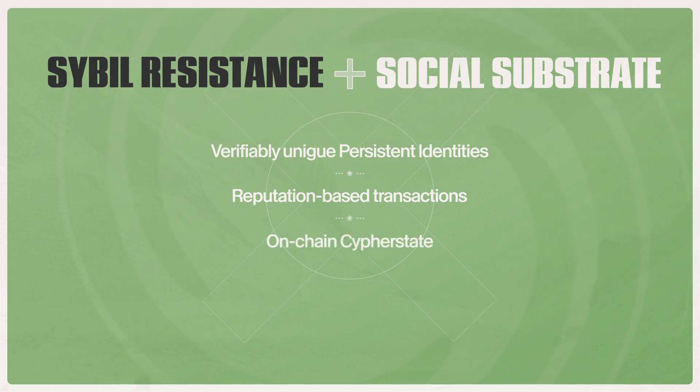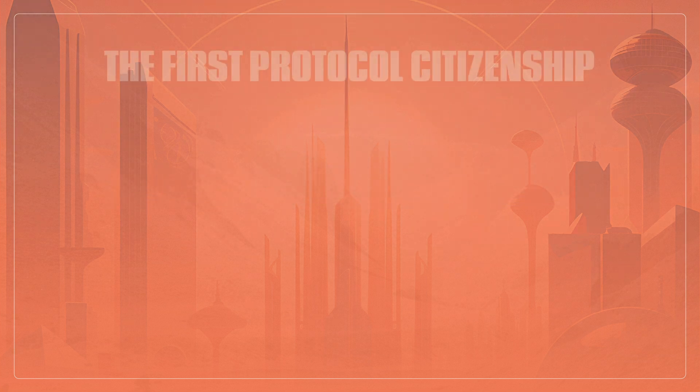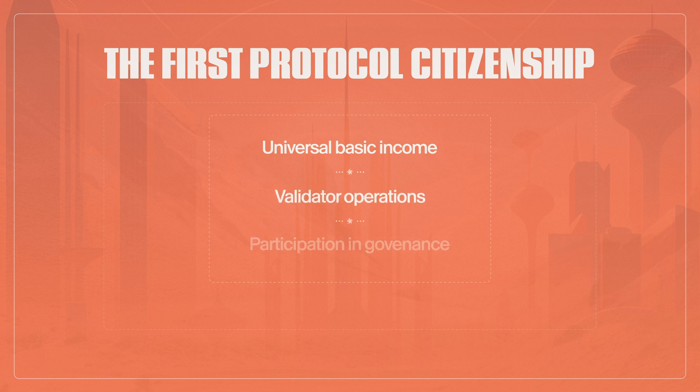This brings us to the last, and what might be the most exciting part of this video — the prospect of the very first protocol citizenship. Galactica Network's citizenship offers various benefits to holders, including a universal basic income based on the value produced by and within the network, the right to become a validator, as well as the right and responsibility to take part in Galactica Network's governance process. These benefits are only those that will be available at launch, and more unique aspects of citizenship will be unveiled as Galactica Network's cipher state grows over time, including both on-chain and real-world benefits exclusive to our citizens.